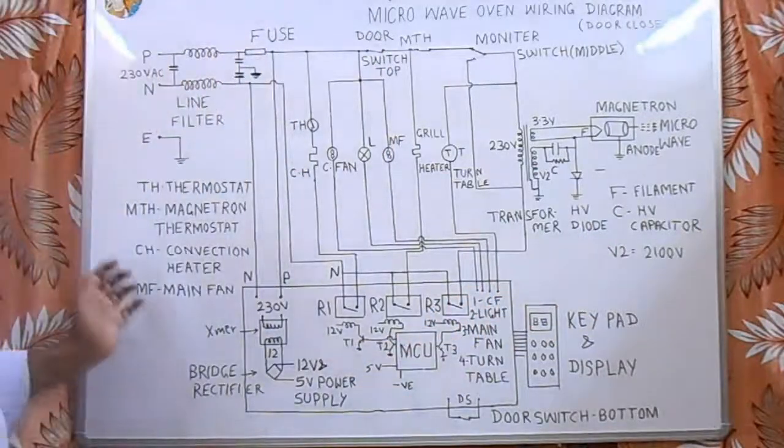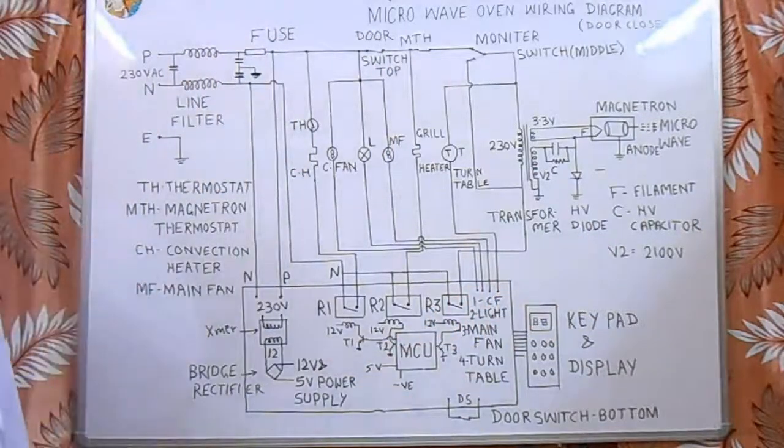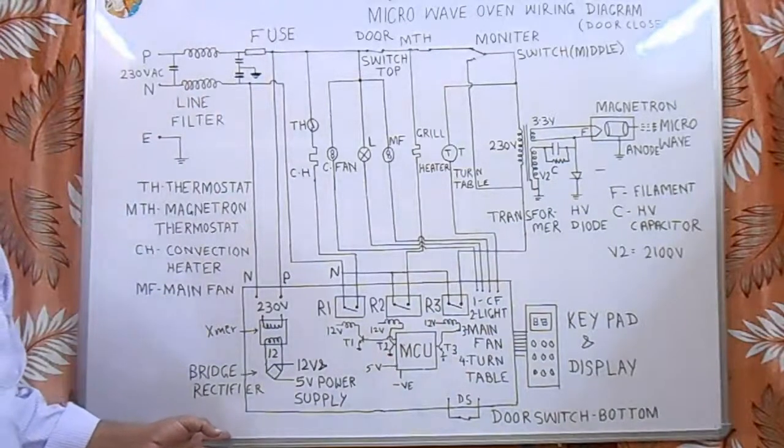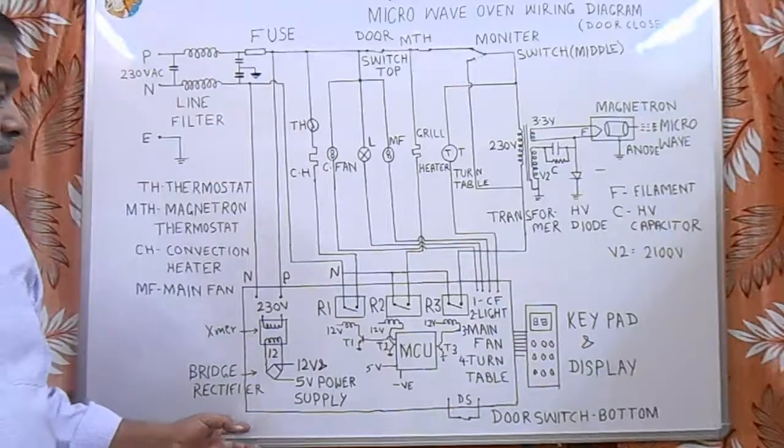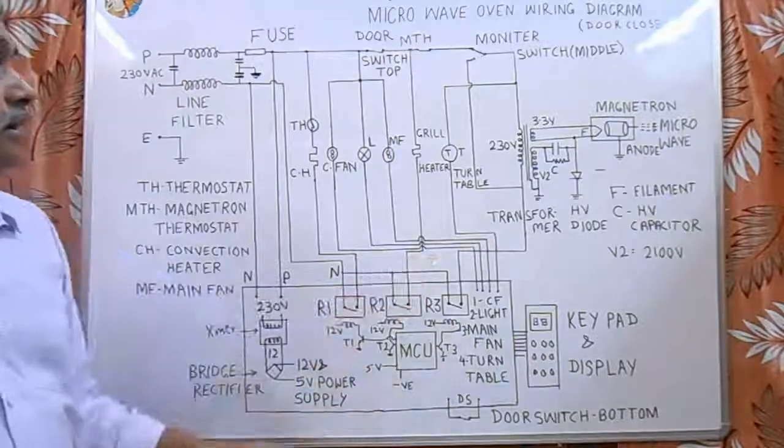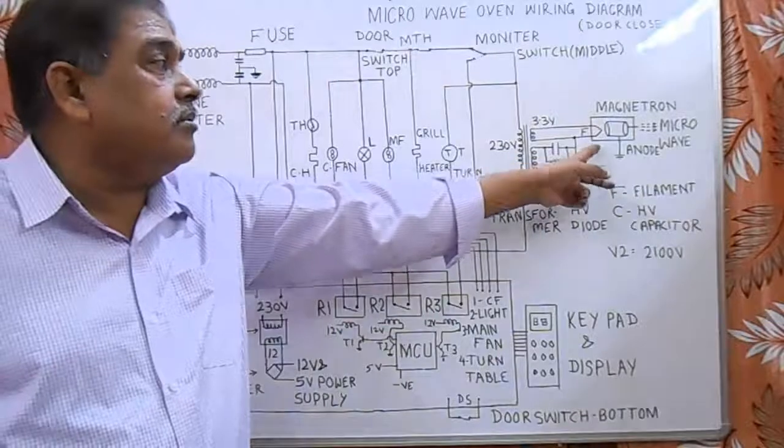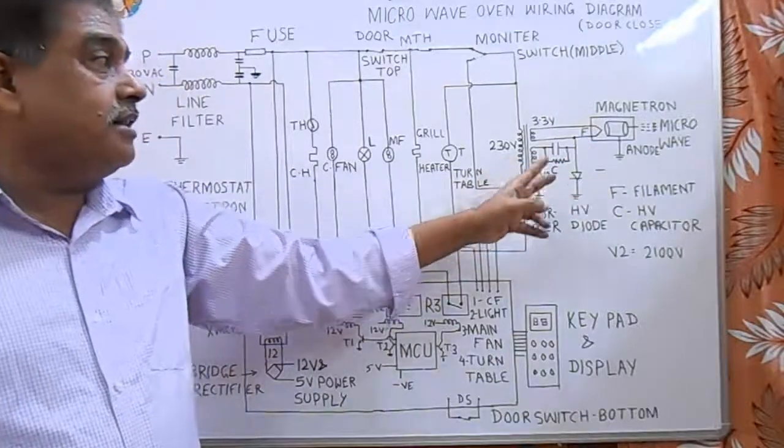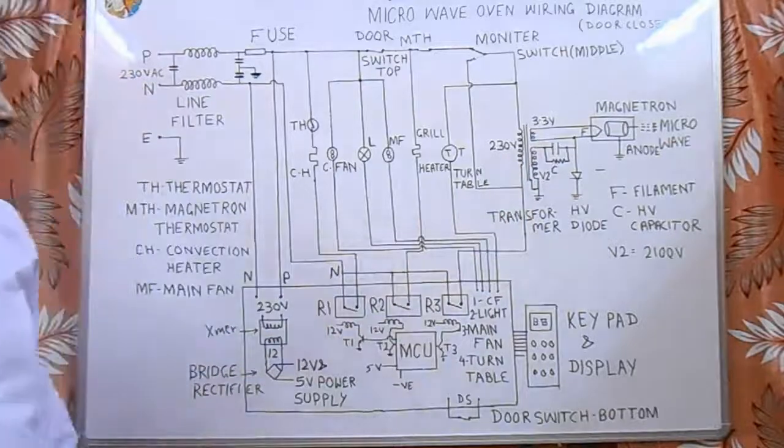So in this way, this is the complete circuit. The main important parts of this circuit are the main control PCB, the magnetron, and the high voltage transformer. These three are the main components in this circuit.